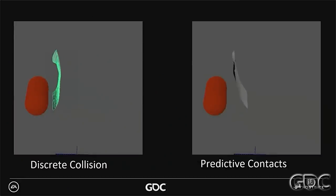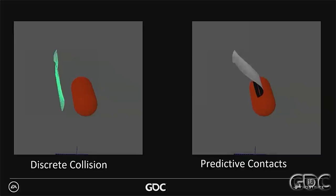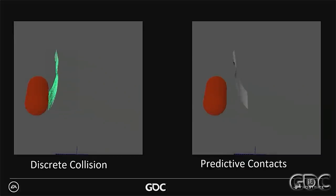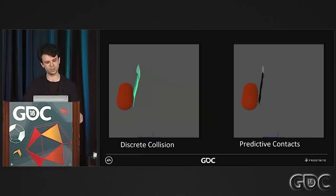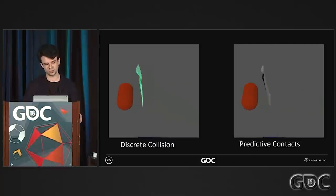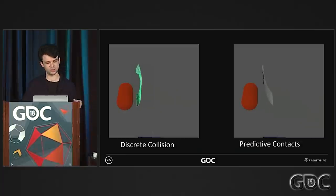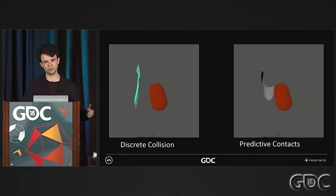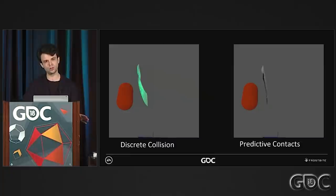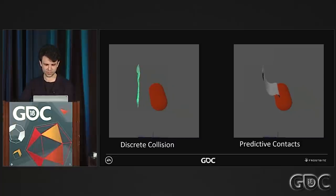Here are two GIFs which demonstrate the practical difference between these collision methods. We have a capsule that moves in one frame from one side of the picture to the other. With discrete collision detection, testing only at the beginning or end of the frame, the cloth doesn't even notice the collider has moved. But with predictive contacts, the cloth reacts in a pretty nice way. There are artifacts associated with predictive contacts — like fake collisions that wouldn't happen if you subdivided the time step — but these are much easier to ignore than cloth just going through stuff.